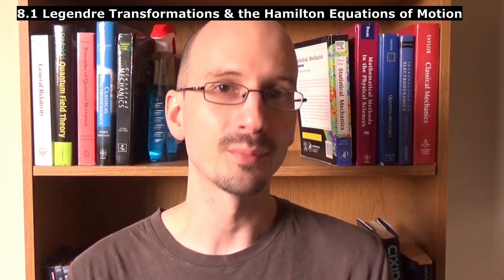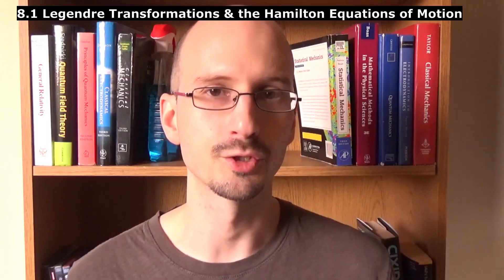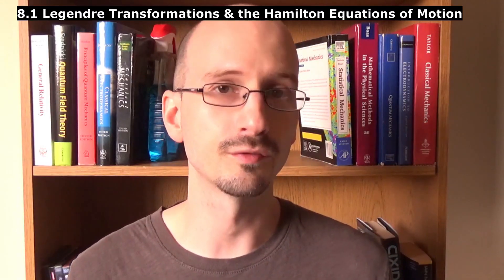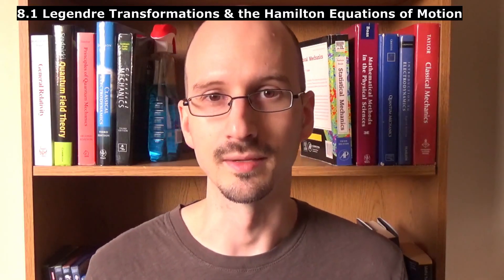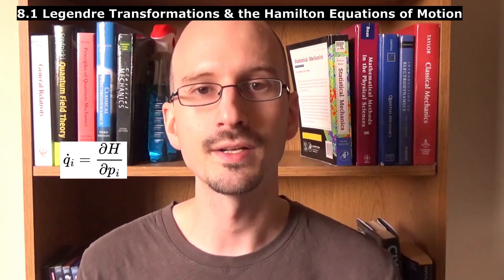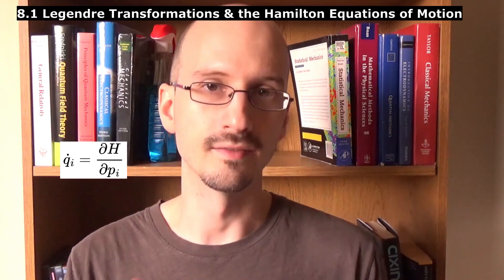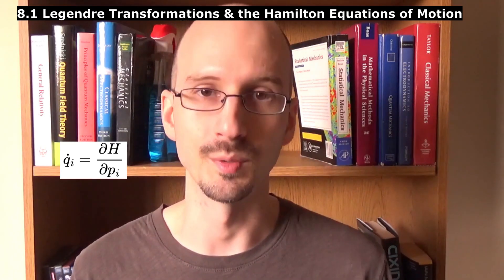Let's look at an example of a particle in a conservative potential field. You could think of this potential field as the Earth's gravitational field if you'd like a specific example. The velocity equation tells us the velocity is equal to the derivative of the Hamiltonian with respect to momentum.